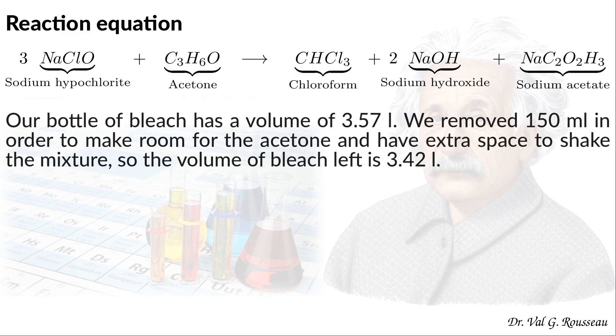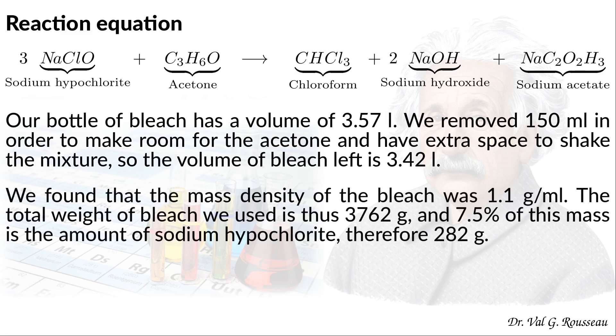The bottle of bleach contained 3.57 liters of product. We removed 150 mls in order to make room for the acetone and have extra space to shake the mixture. So the volume of bleach left in the bottle is 3.42 liters. Then, we measured the mass density of the bleach to be 1.1 grams per ml. This means that the total weight of bleach we used is 3,762 grams and 7.5 percent of this mass is the amount of sodium hypochlorite. This corresponds to 282 grams.